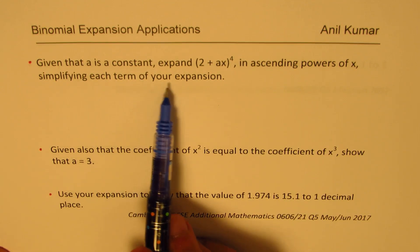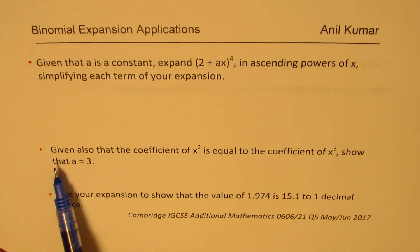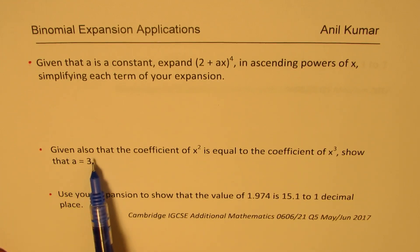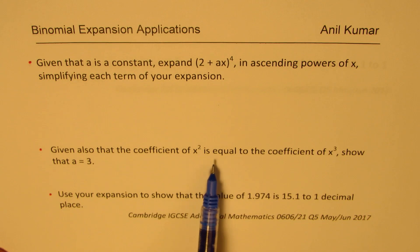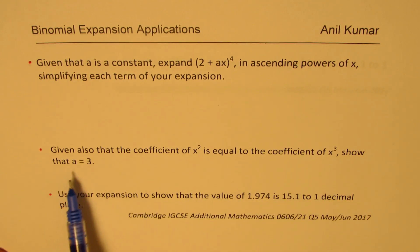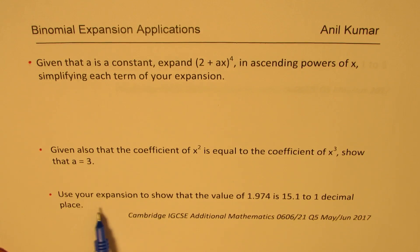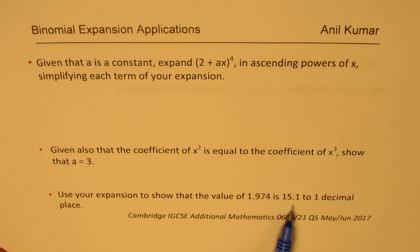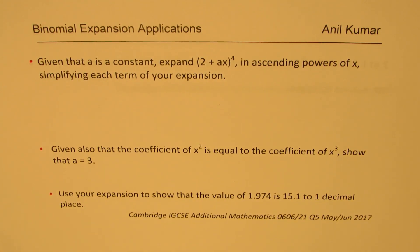The second part: given also that the coefficient of x² is equal to the coefficient of x³, show that a equals 3. The last part: use your expansion to show that the value of 1.97^4 is 15.1 to one decimal place. It's a good question, and since we already have answers for the last two parts, we don't really have to guess and check as in a multiple choice question.